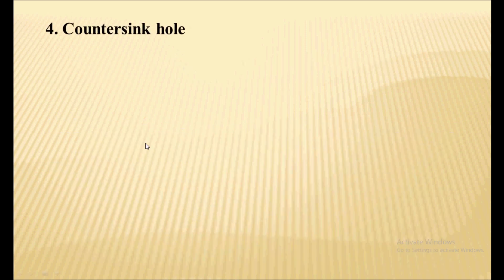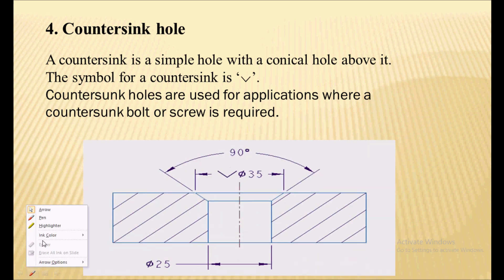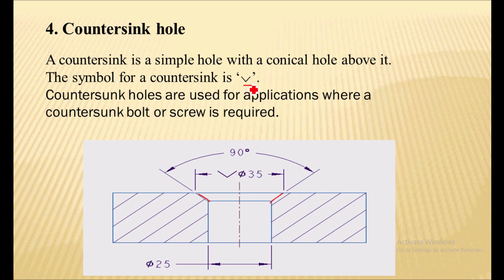The next hole is the countersink hole. It is a simple hole with a conical hole above it. The symbol for a countersink hole is V-like in shape. Countersink holes are used in applications where a countersink bolt or screw is required — you can place a screw into this hole. Here, diameter 35 mm represents the countersink hole dimension.